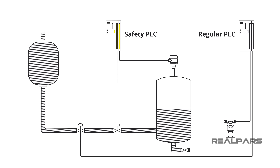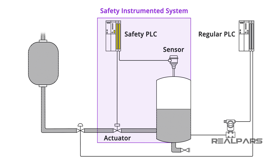In this video, we're going to talk about a very important part of any automated industrial process: the Safety PLC. A Safety PLC is one of the three parts of a Safety Instrumented System, or SIS.